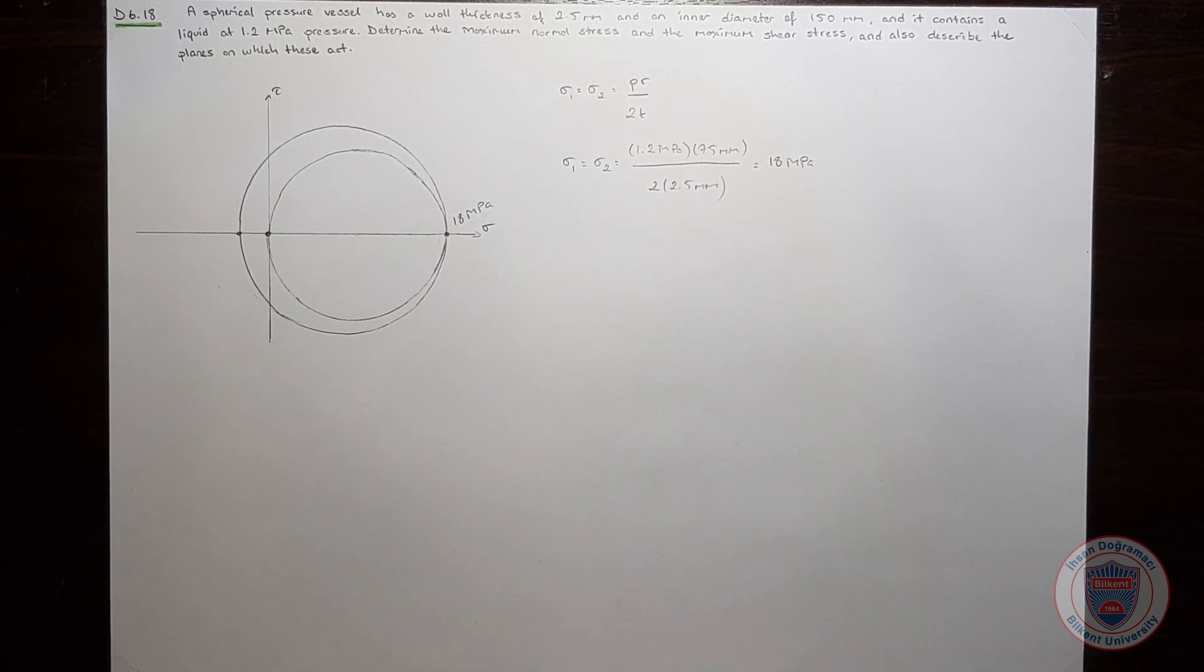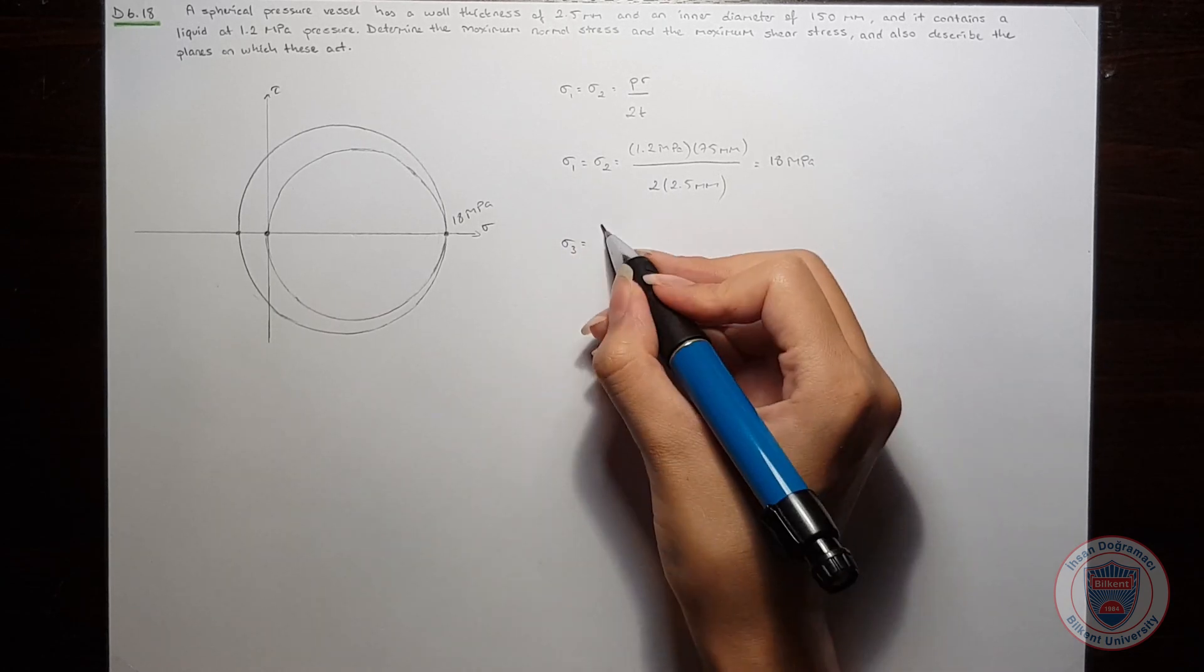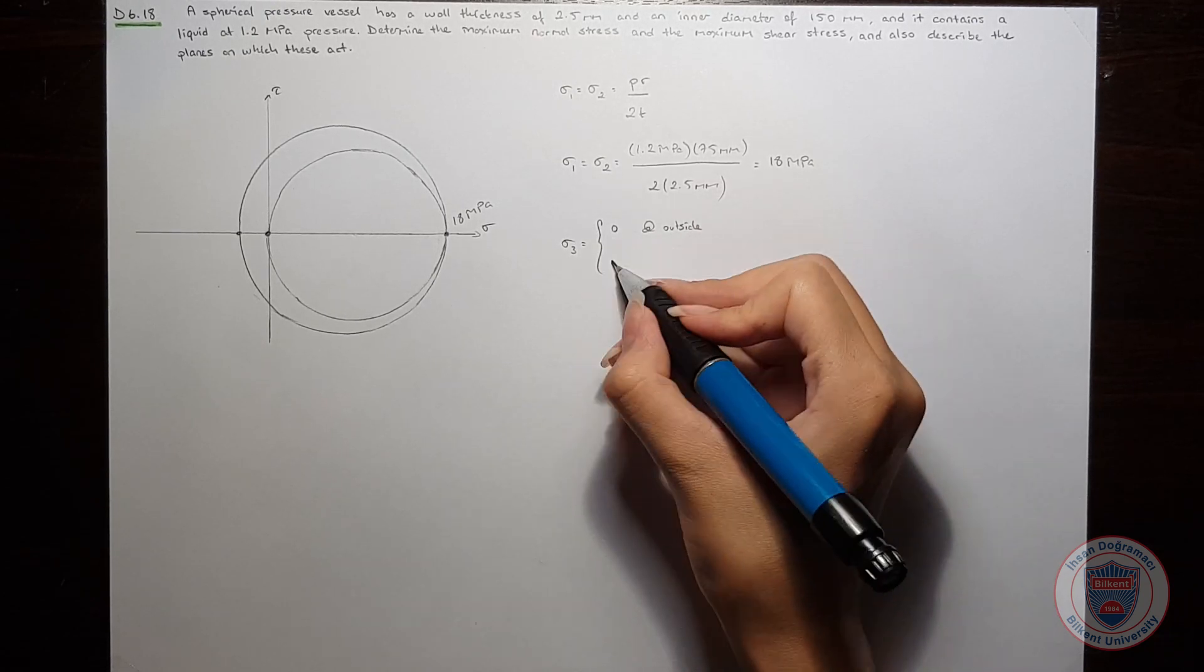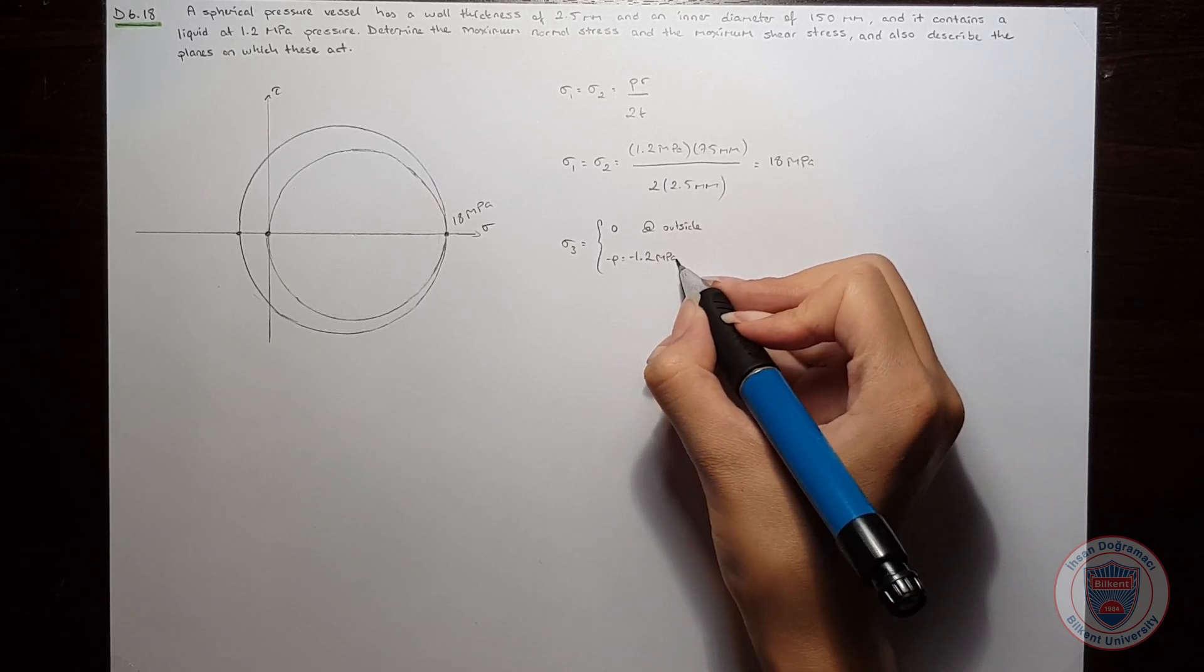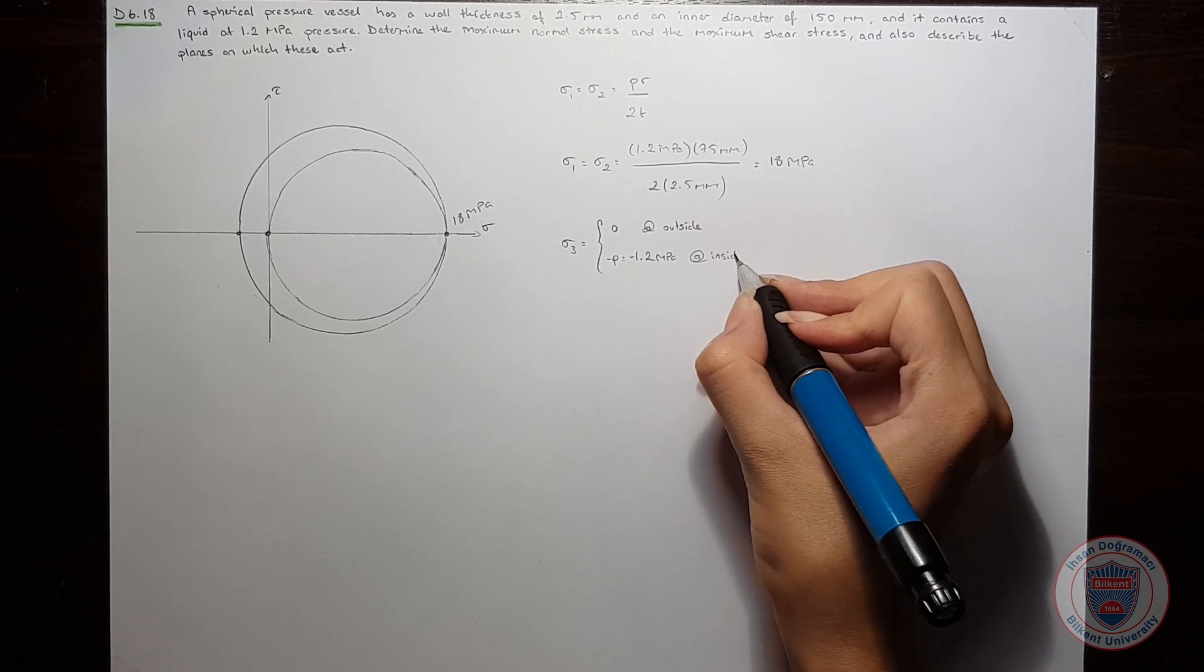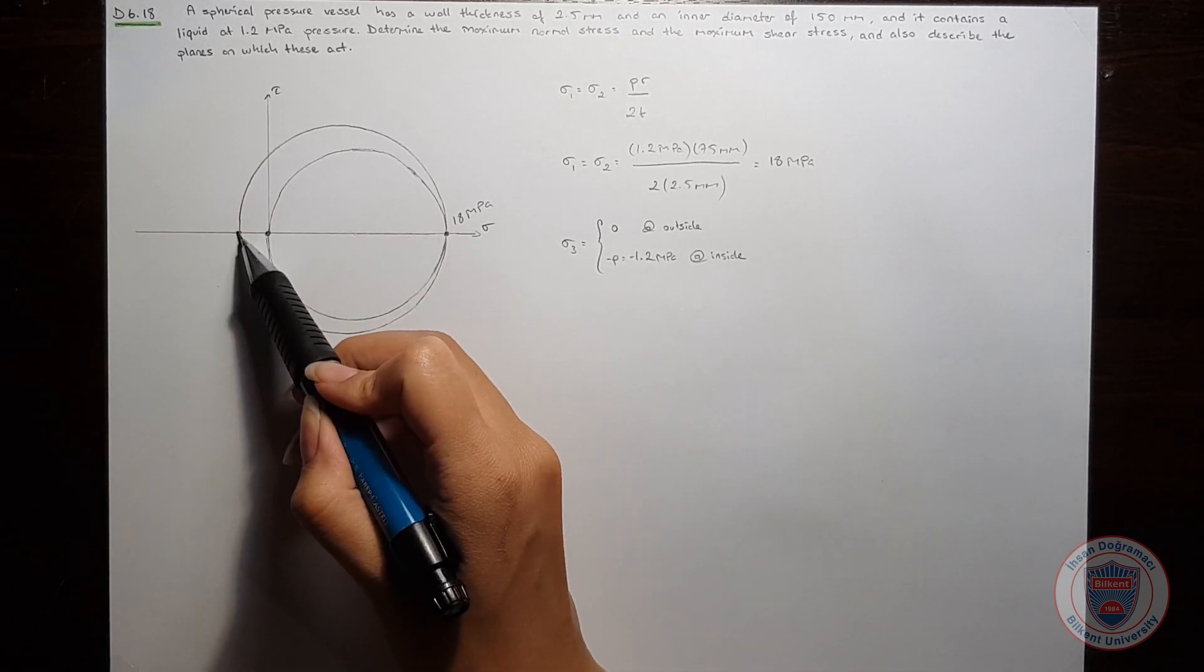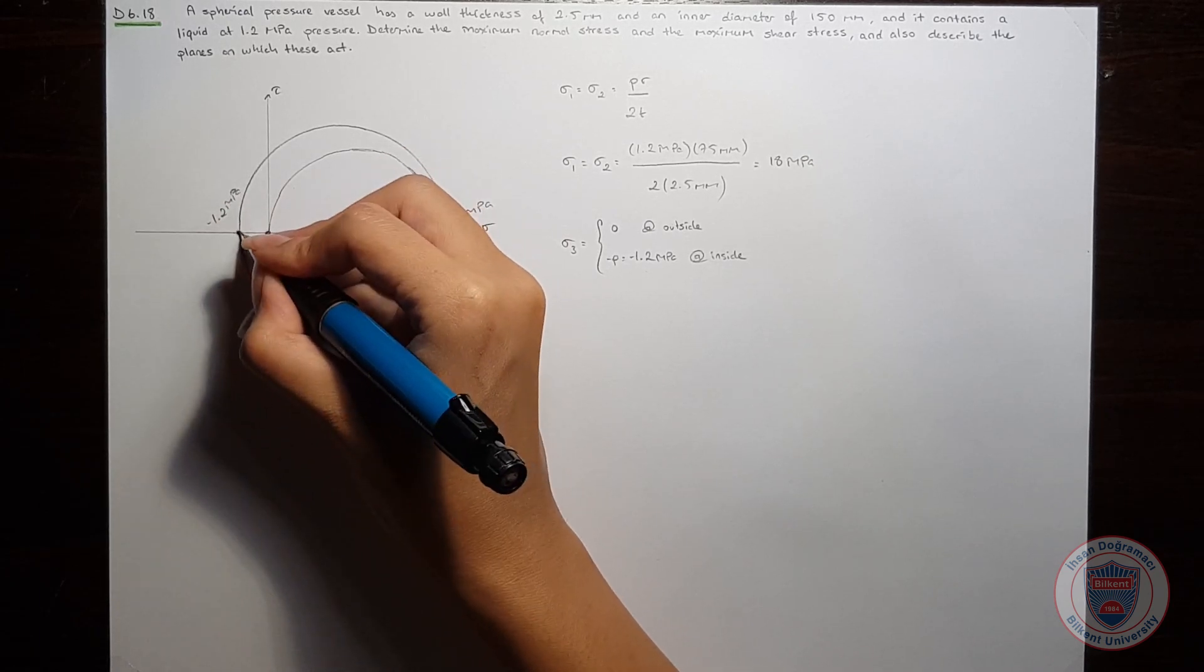Now let's find sigma3. Sigma3 will be equal to 0 at the outside and minus p, which is equal to minus 1.2 MPa on the inside. So on the outside sigma3 will be 0 and on the inside sigma3 will be minus 1.2 MPa, which is this point.